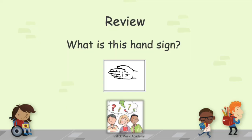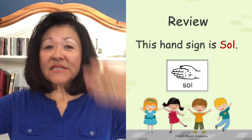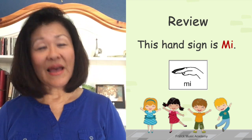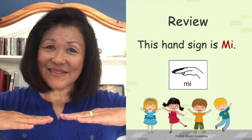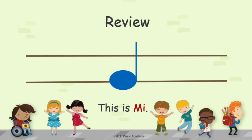Now let's review what we've learned today. What is this hand sign? Yes, it's so. Remember, so is brick walls right by your eyes. What is this hand sign? You're right, it's me. Me is a flat table in front of your chest. Look at this musical road. Who is this? It's me. Since me is lower than so, it's on the bottom line.